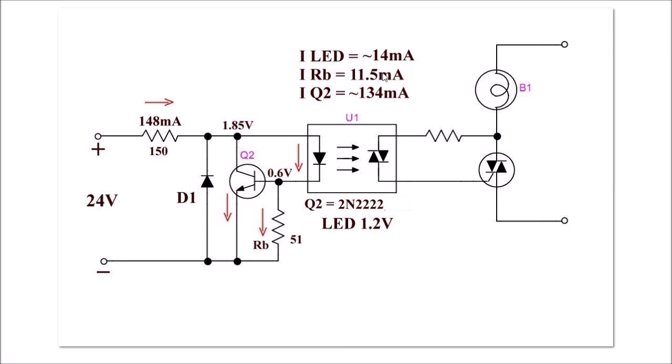And 11.5 milliamps approximately is going to flow through Rb, the 51 ohm resistor. But the remaining milliamps are going to be shoved through the base emitter circuit of Q2.